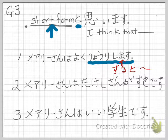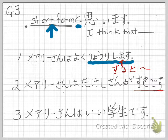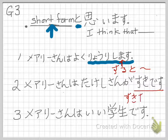How about number two? Mary-san wa Takeshi-san ga suki desu, and then you add to omoimasu — 'I think Mary likes Takeshi.' So the suki desu part needs to be in short form. This is not an adjective, so you have to say suki da. The full sentence is: Mary-san wa Takeshi-san ga suki da to omoimasu.